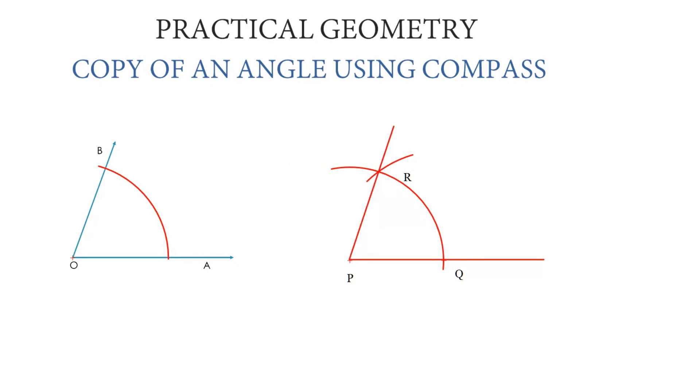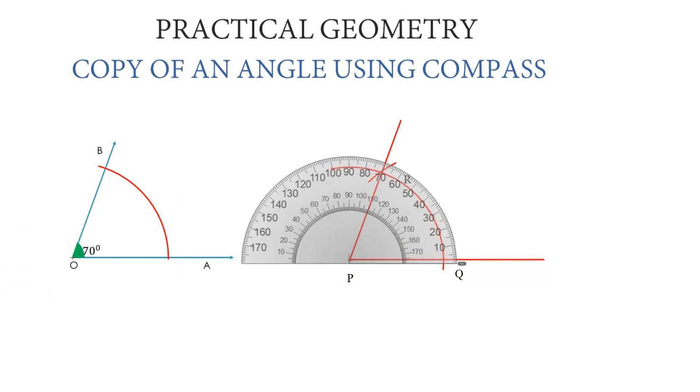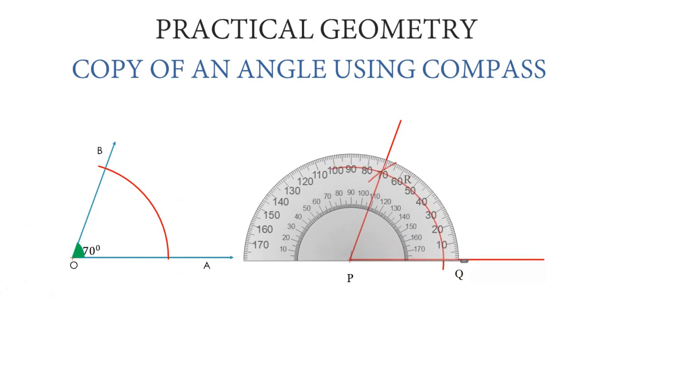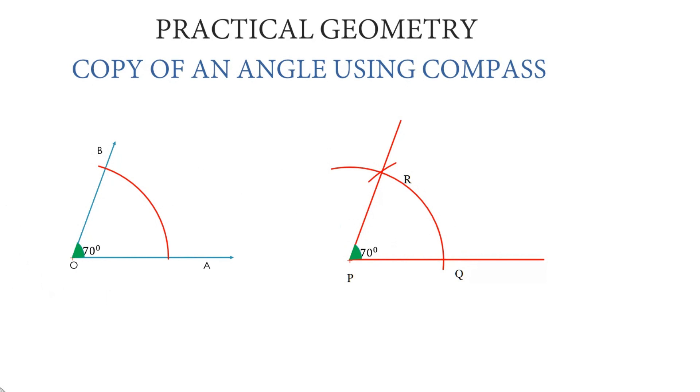Now let us measure the angles and see whether they are the same or not. For angle AOB, use the protractor and see it is 70 degrees. We will also measure angle QPR. Placing the protractor, you can see this is also 70 degrees. In this way, we can make the copy using a compass.